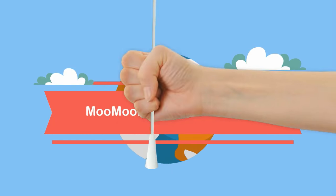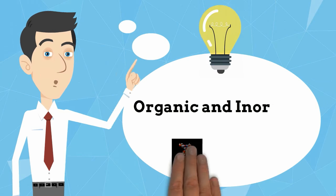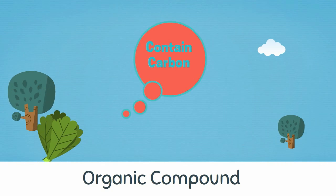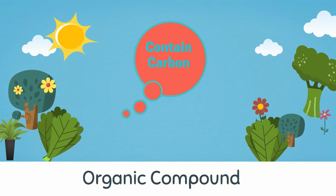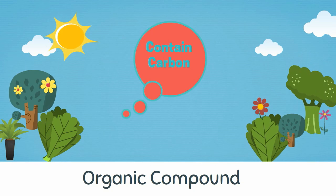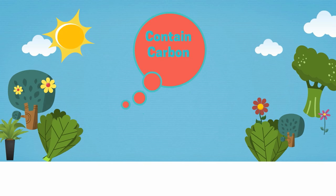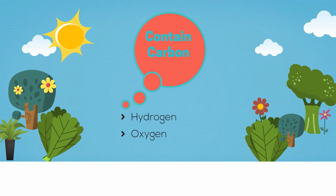Welcome to Moo Moo Math and Science. In this video I'd like to talk about organic and inorganic compounds. Many of the compounds found in living things contain the element carbon, which is usually combined with other elements. This large class of chemical compounds, in which one or more atoms of carbon are covalently linked to atoms of other elements — most of the time hydrogen, oxygen, or nitrogen.